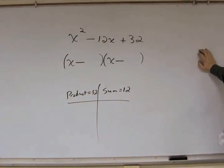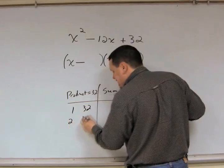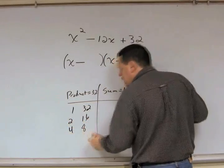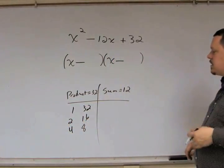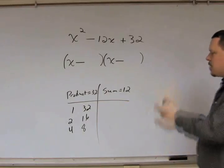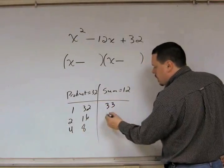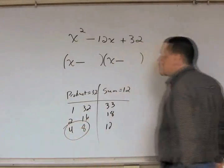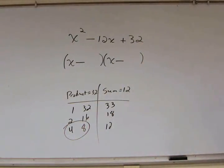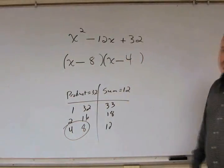So, we go through our list of pairs of numbers as the product of 32. 1 and 32, 2 and 16, 4 and 8, 5 doesn't go into there, 6 doesn't go into there, 7 doesn't, 8 goes, and you're starting off the right-hand side. And you go through your sums, 33, 18, 12. There's your pair. Put the larger one first, and the smaller one second.